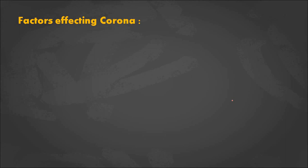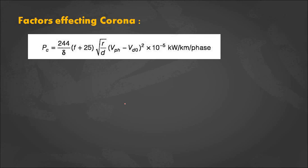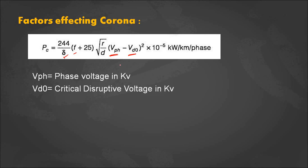Now let's look at the factors affecting corona using the corona loss formula. The corona loss equals 244 divided by Delta, where Delta is the air density factor, F is the frequency of the transmitting voltage or current, R is the radius of the conductor, D is the distance between the conductors, and the other terms are the transmission voltage and the critical disruptive voltage. The main factor affecting corona is the phase voltage of the conductor in kV.